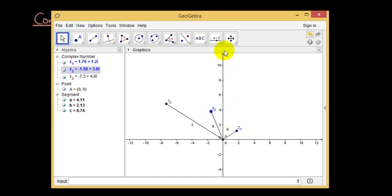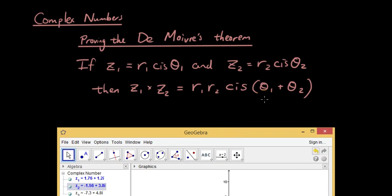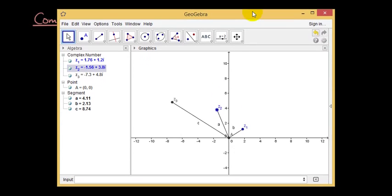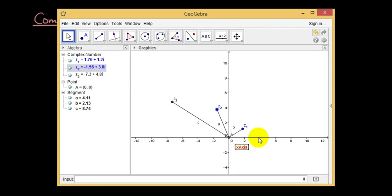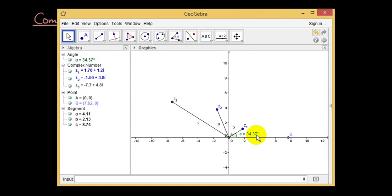Now we're going to look at the argument. The rule says that the argument of the result is equal to the sum of the two arguments. So let's have a look at the argument of z1. The argument of z1 is 34.37 degrees.